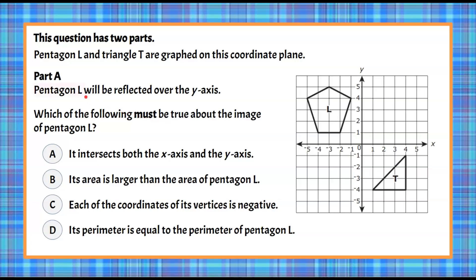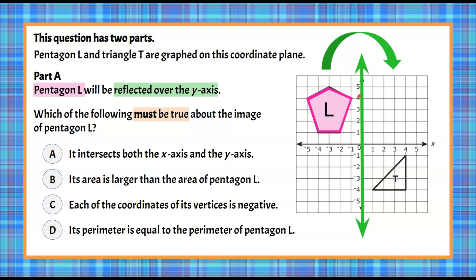Welcome back. So we have pentagon L that's going to be reflected over the y-axis, and we're going to identify what must be true of these four statements. Here's pentagon L on our coordinate plane. The y-axis is going to be our line of reflection. Every vertex is going to be the same distance from the y-axis on the left side as on the right side. So here's the top vertex — it's three away from the line of reflection, then three on the other side. Each vertex maps symmetrically, and we can see it's the same size and shape. All reflections must be the same size and shape. So this is our image L prime of the reflected pentagon.